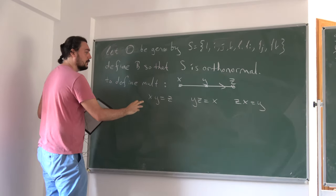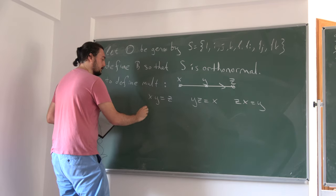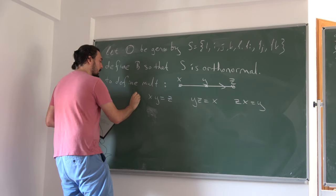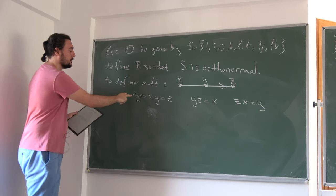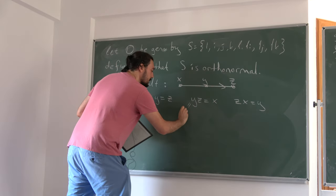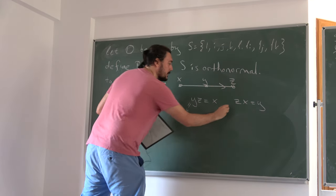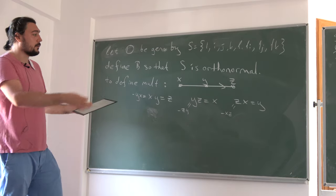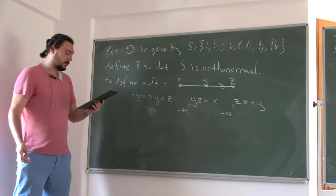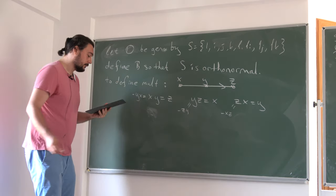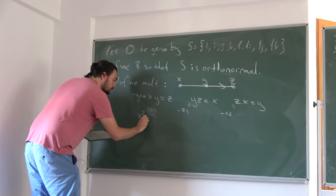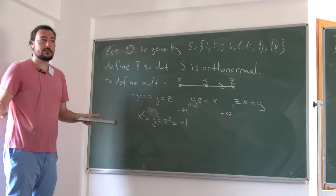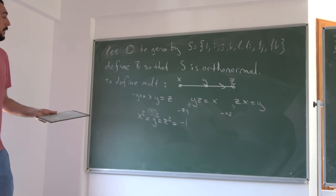Given any element of Octonians, you can decompose it into real part plus imaginary part, which simplifies most computations. Using this decomposition we define conjugation: Ū = Re(U) − Im(U), just like in complex numbers — keep the real part, negate the imaginary part. It's not hard to prove that the conjugate of UV equals V̄·Ū, provable on basis elements.